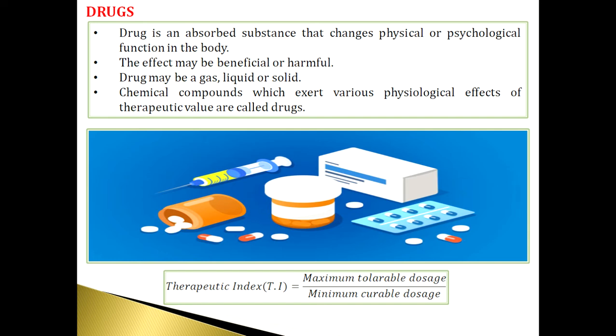What is the action of drugs? An ideal drug should localize at the site where it is required upon administration. However, no drug behaves ideally. The drug distributes itself anywhere in the tissues of the host, and the body develops resistance to the drug after some time, causing it to stop working.